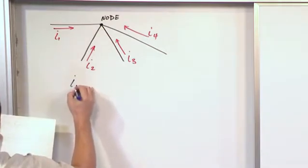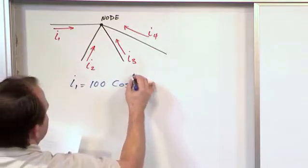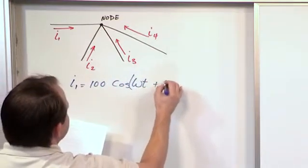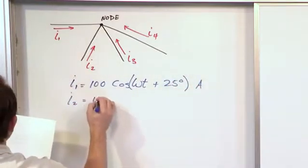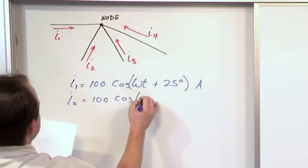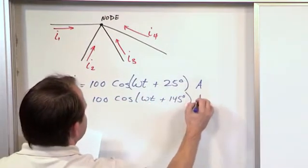Here we're given the fact that I1 is 100 times cosine of omega t plus 25 degrees, and that's amps of course. I2 is 100 times cosine of omega t plus 145 degrees, that's of course in amps.